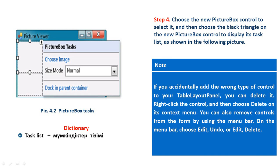Step 4: Choose the new picture box control to select it, and then choose the black triangle on the new picture box control to display its task list.